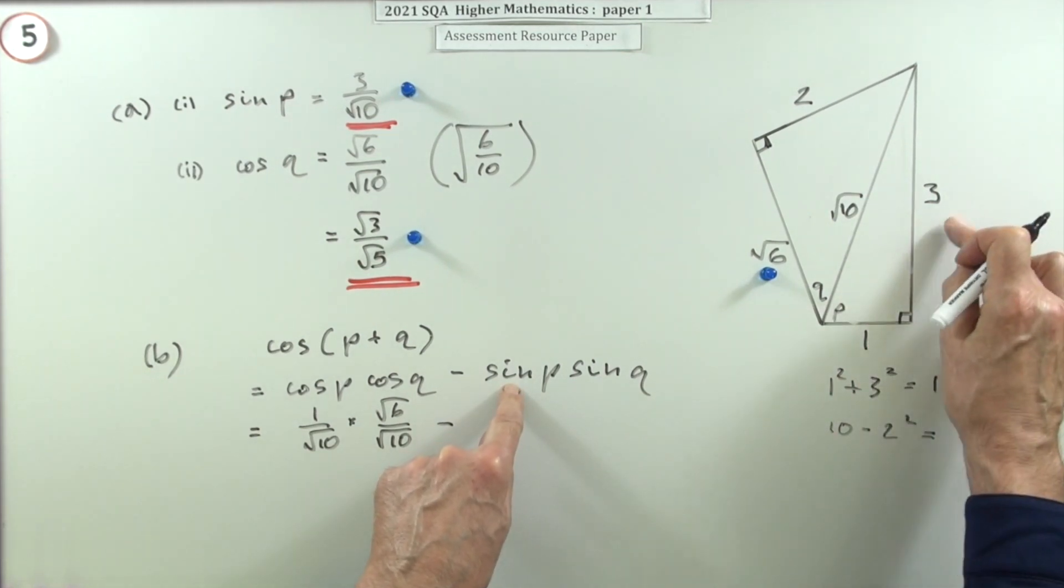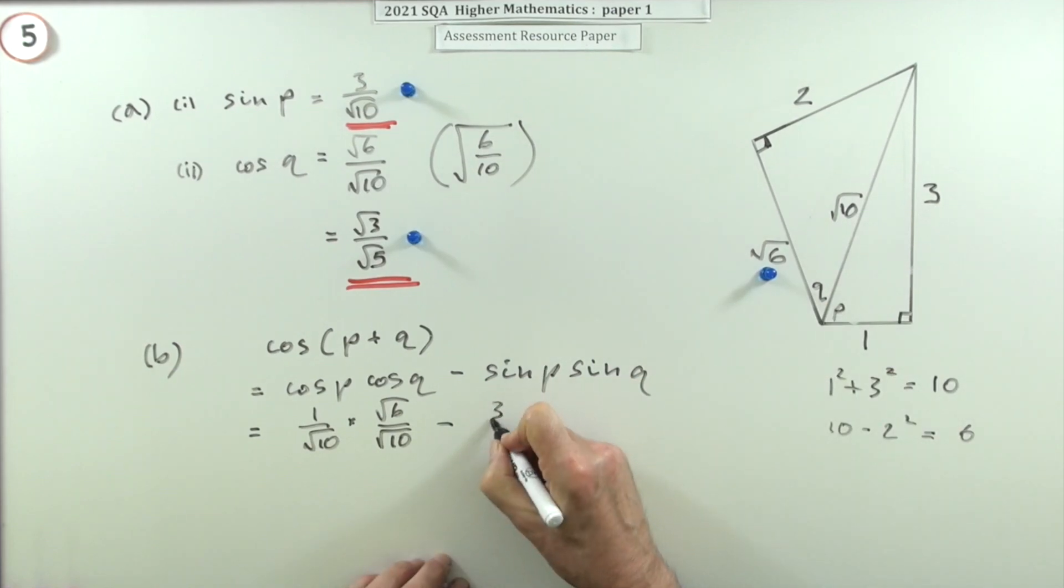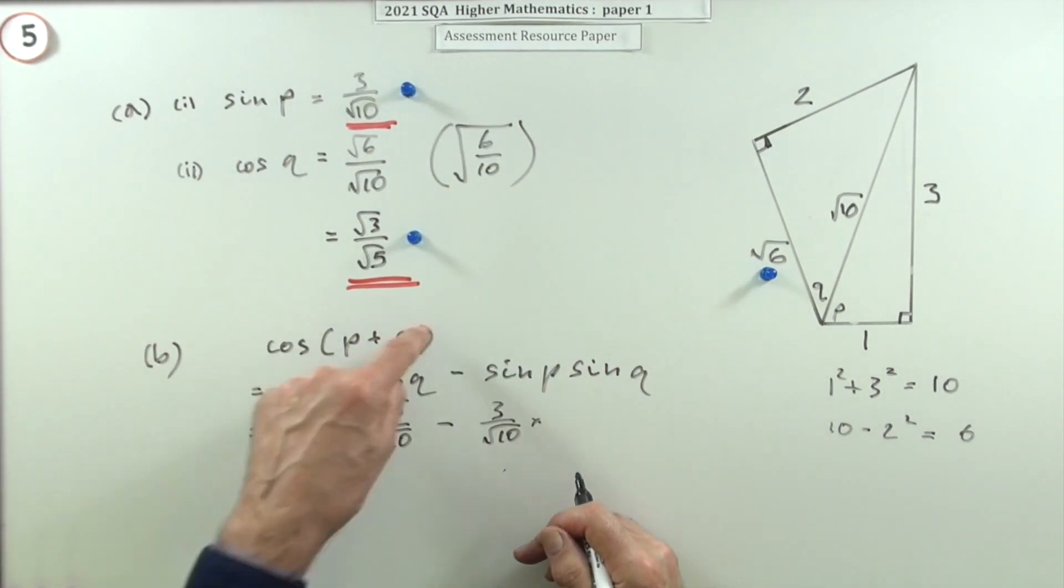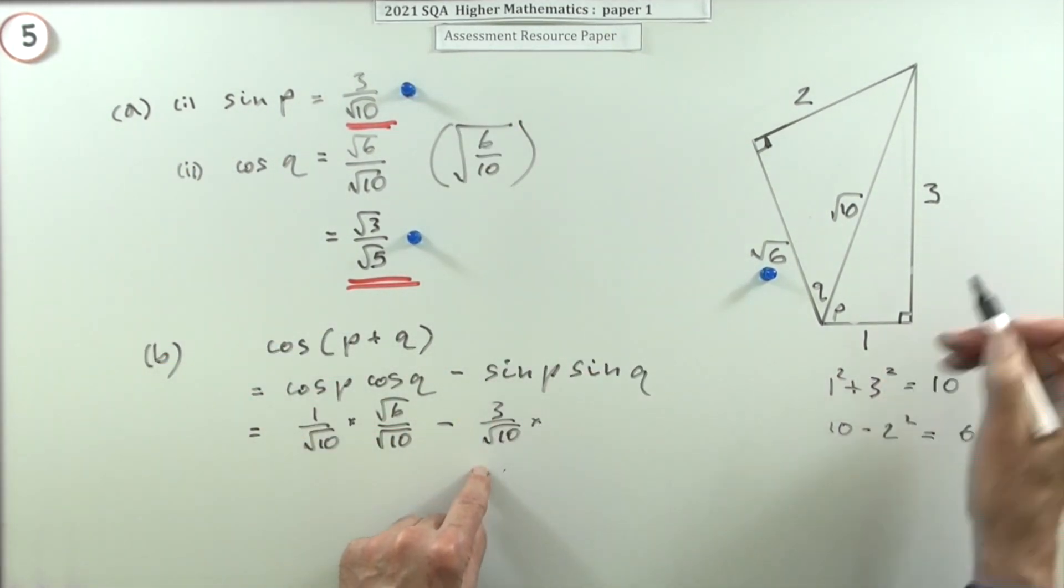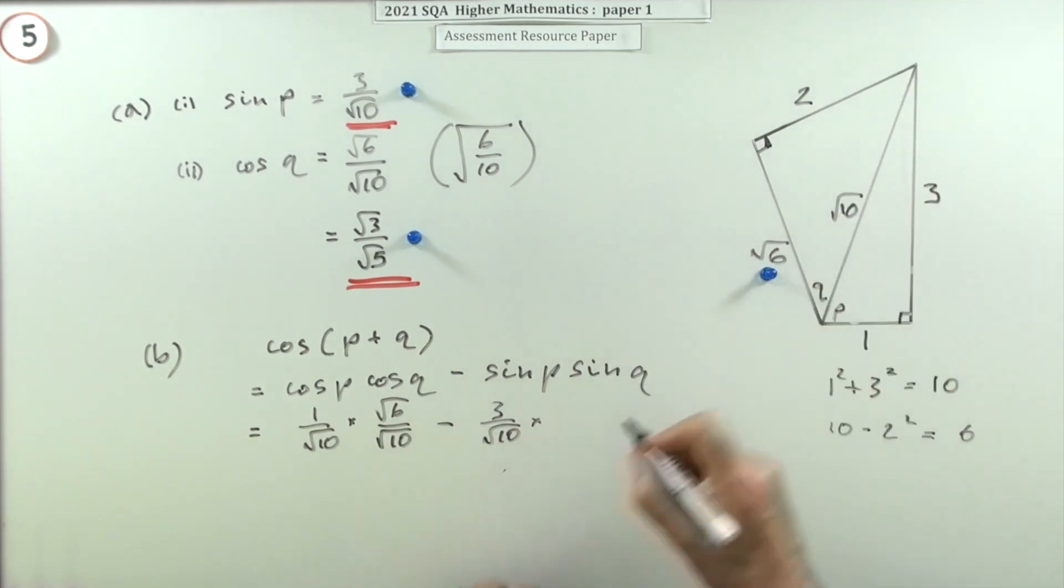Sine of P - opposite - that's the 3/√10. I know they were up there, but I'm just double-checking. You didn't really need to do that, but you had to to get the marks. And then the sine of Q - that means opposite the Q - so that's 2/√10.